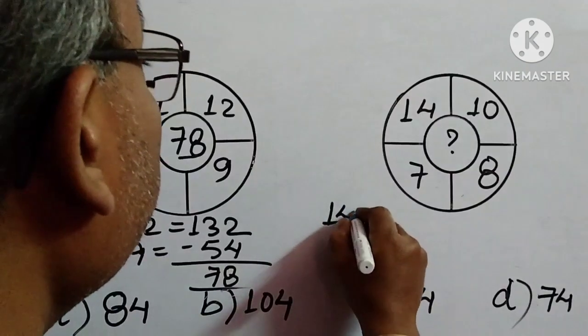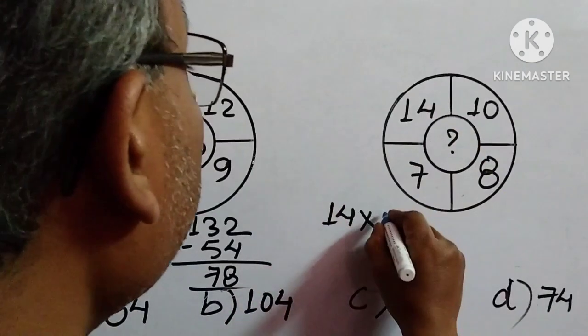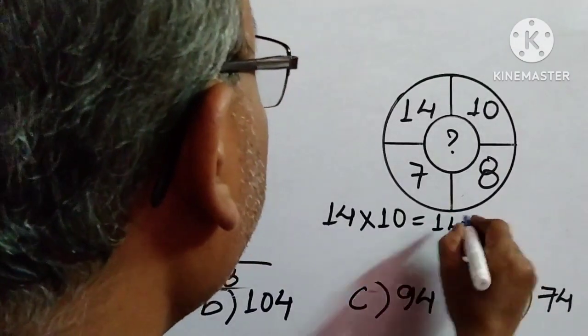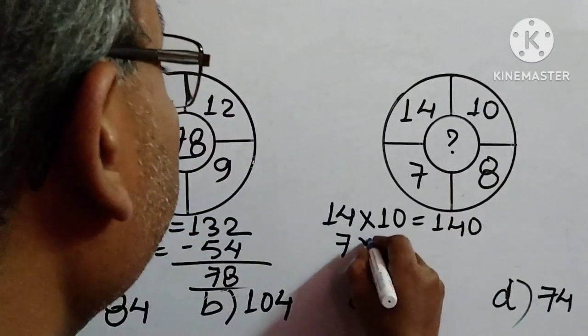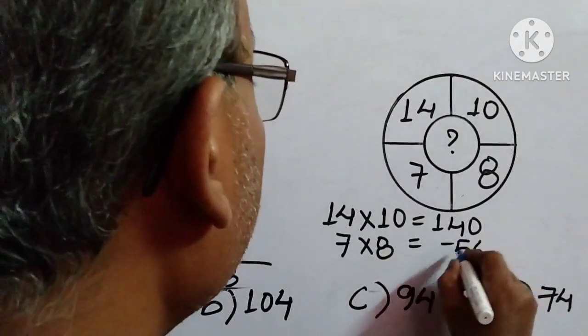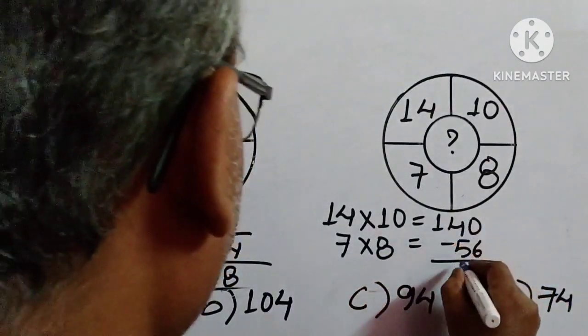14 into 10 is 140, and 7 into 8 is 56. Subtract this one, so it comes to how much?